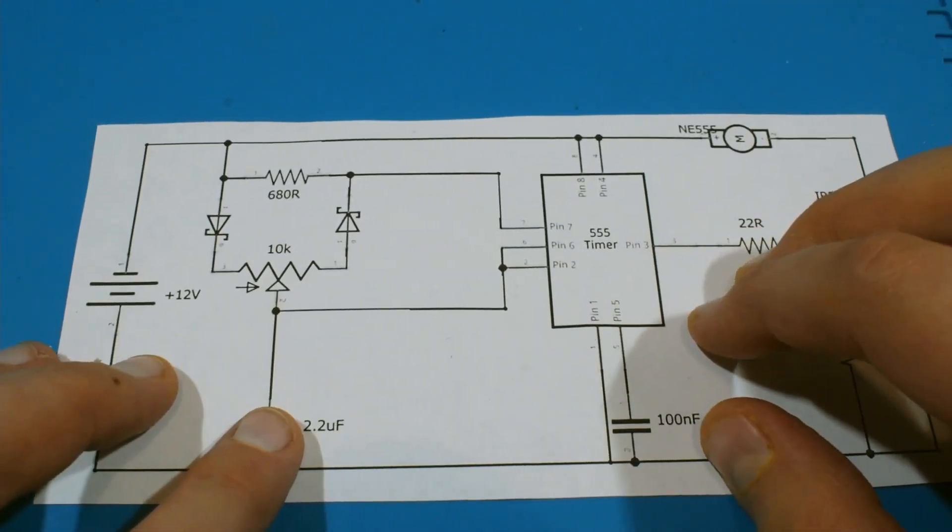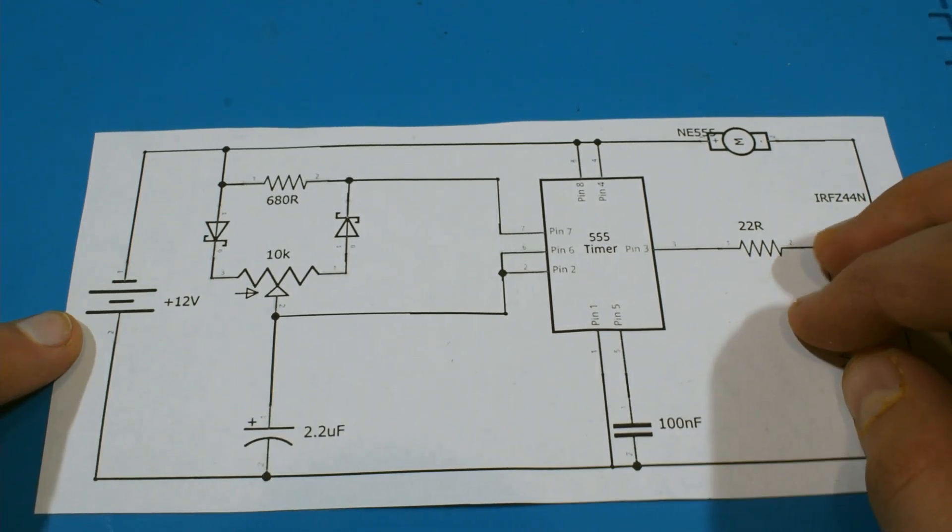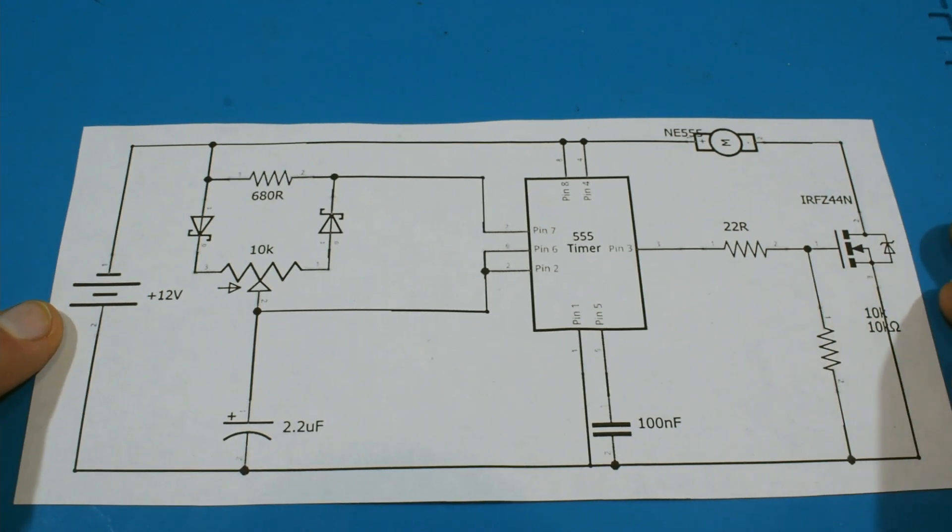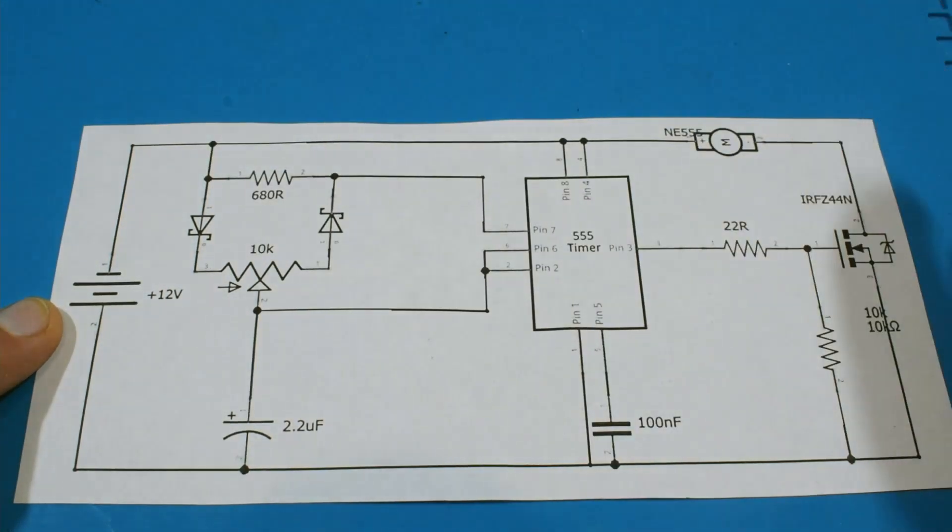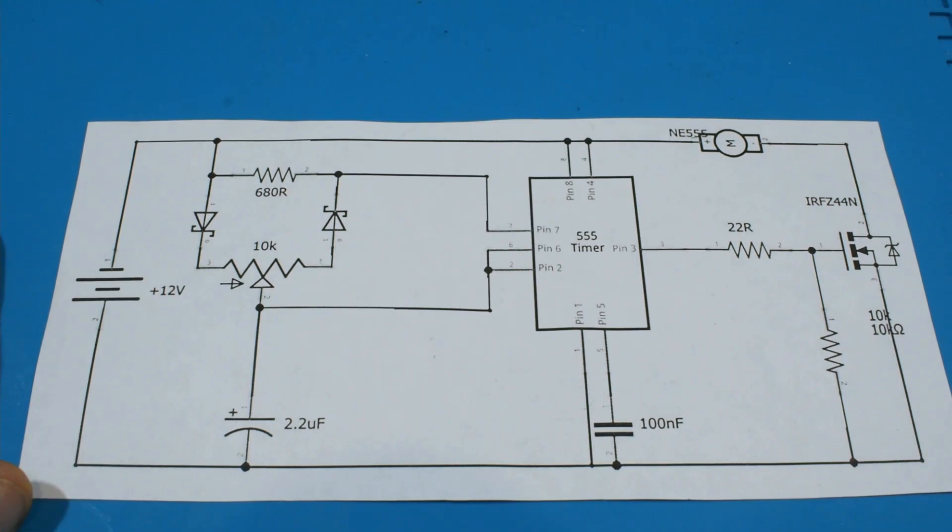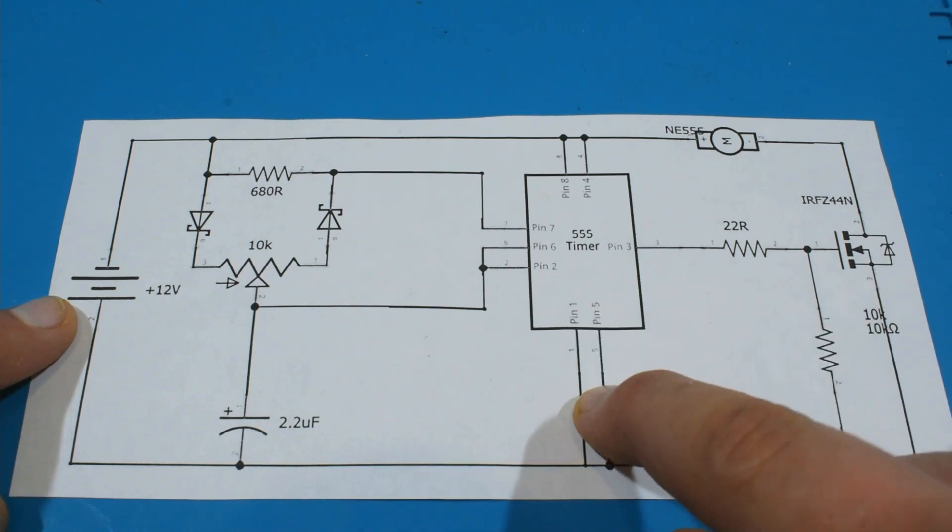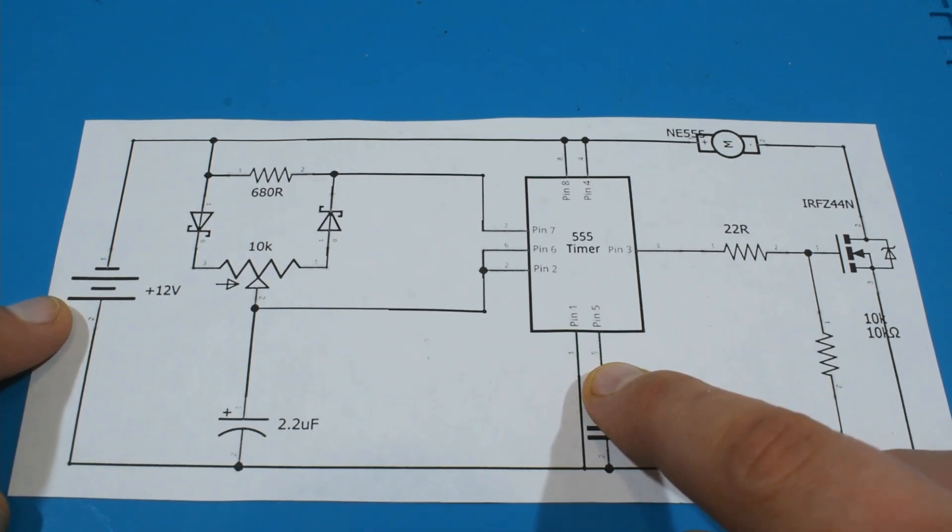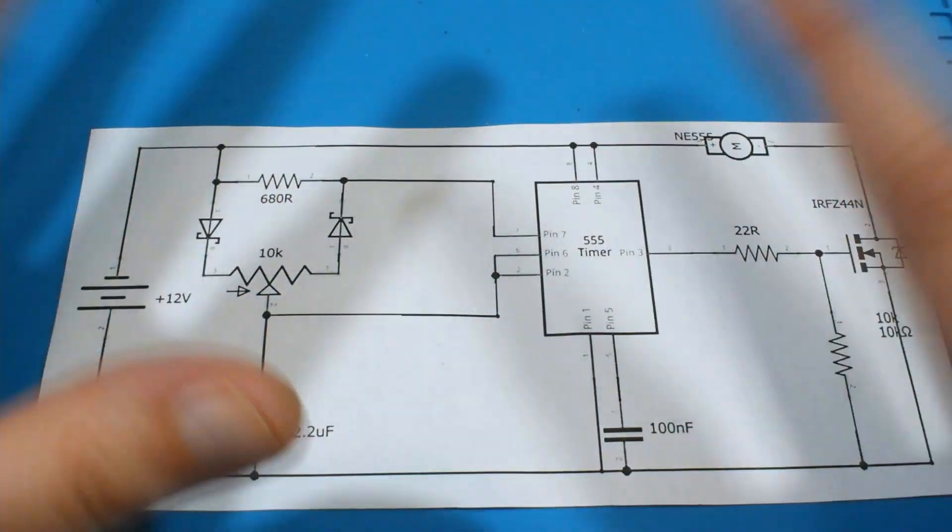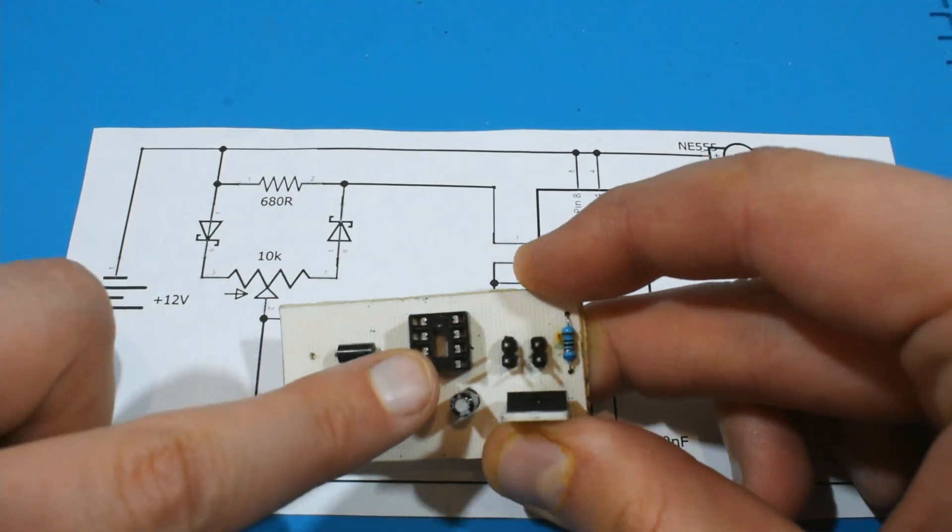This schematic was made in fritzing. Many of you know fritzing. It's sort of a hobbyist software where you can create schematics and PCBs. I don't know how this slipped by me but I reversed the polarities and 12 volts was going into the ground pin and ground was going into the VCC. That's why the chip caught on fire.